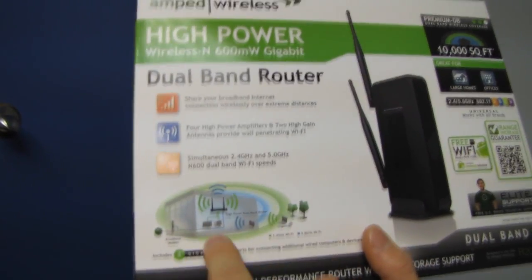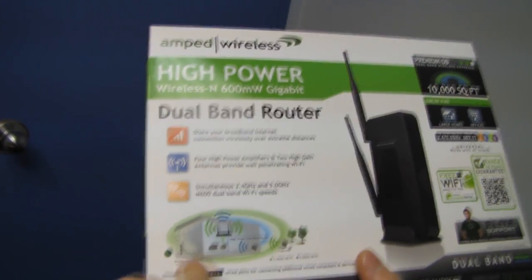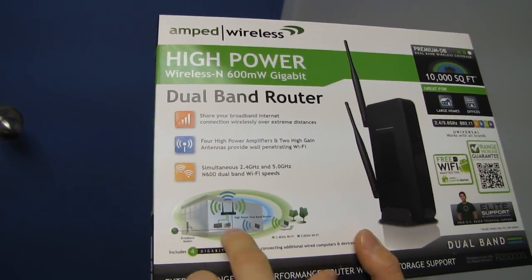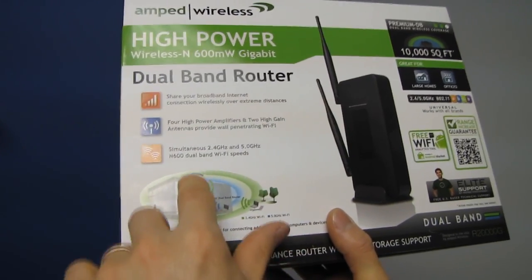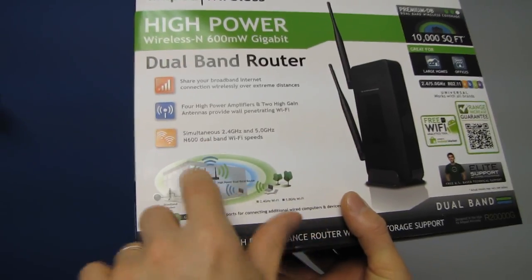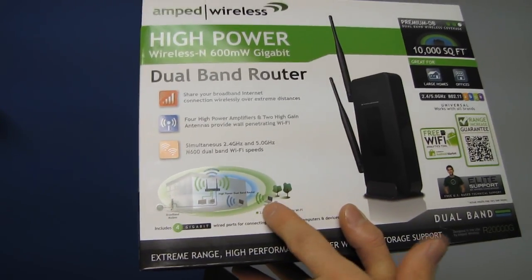We also have a diagram of how it might be set up including the broadband modem which goes in here and then the wired connectivity. Your low range here and then your high range that goes clear outside of the building that they have diagrammed here.